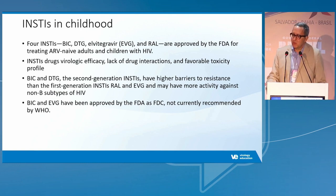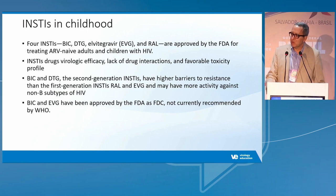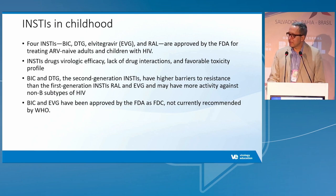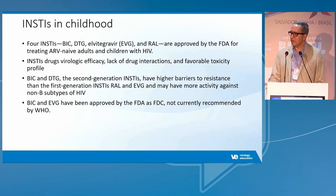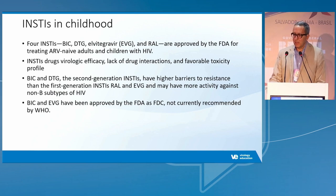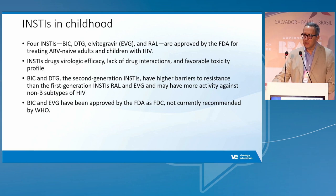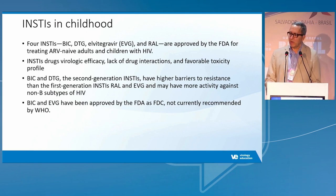We have four FDA-approved integrase inhibitors for use in children and adults. Integrase inhibitors are characterized by virological efficacy, low drug-drug interaction rates, and favorable toxicity. However, bictegravir is only available in a combined fixed dosage and is FDA-released but not recommended by the WHO. The second generation of integrase inhibitors includes dolutegravir and bictegravir, which are more powerful compared to raltegravir and elvitegravir.